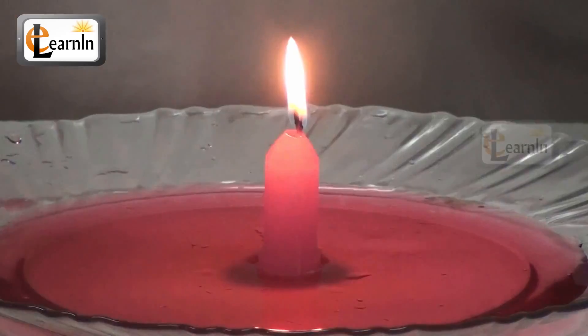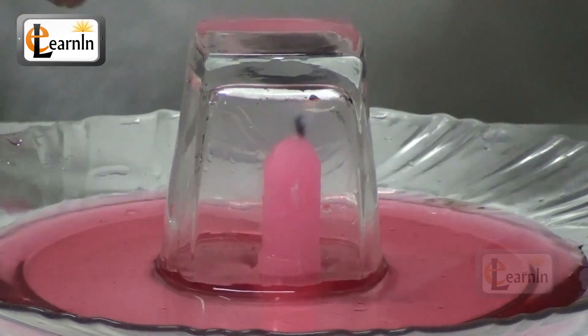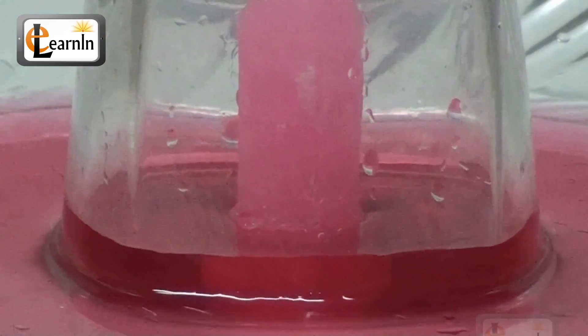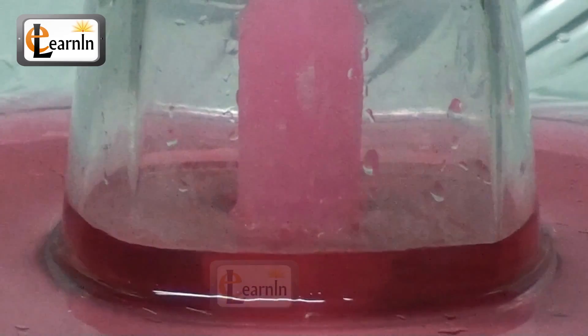Put the inverted glass over the candle. Now, you should observe that the candle goes out, and the water on the plate gets sucked inside the glass, and the water level inside the glass rises up.